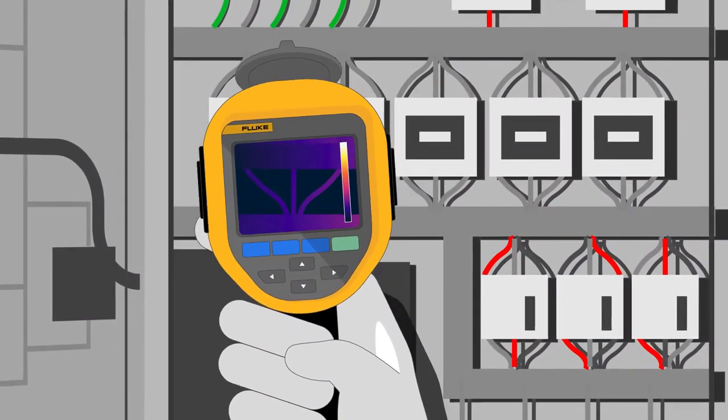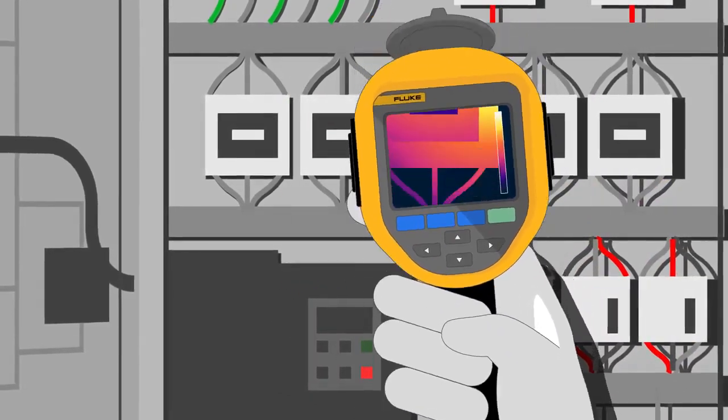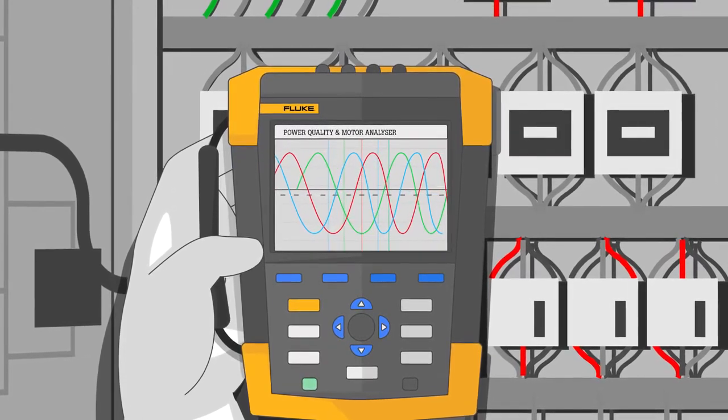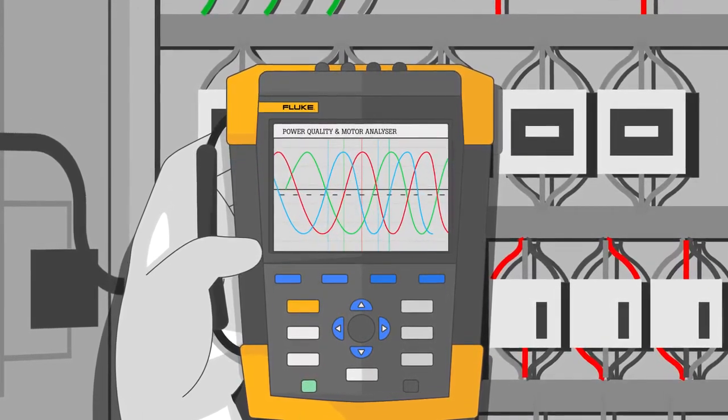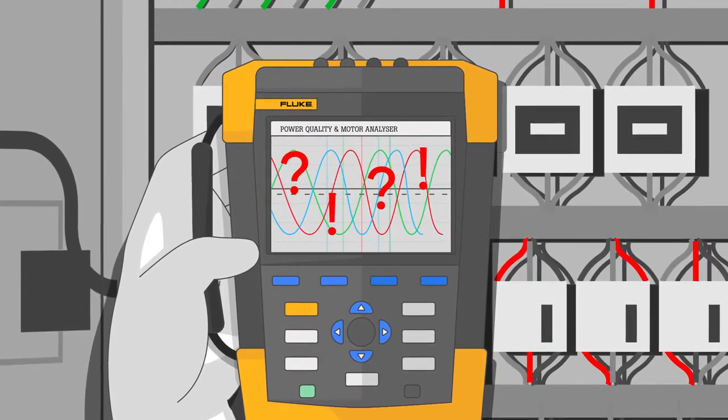With Fluke thermal cameras, you can detect critical issues before they become a problem. The Fluke Power Quality and Motor Analyzers help you quickly and easily evaluate electrical and mechanical performance and maintain motor efficiency, saving energy and preventing unscheduled breakdowns.